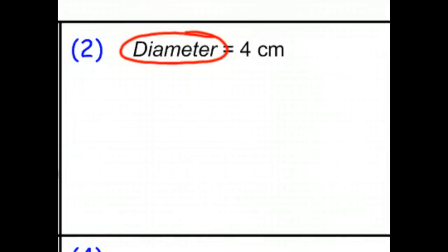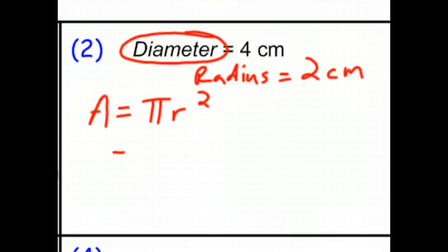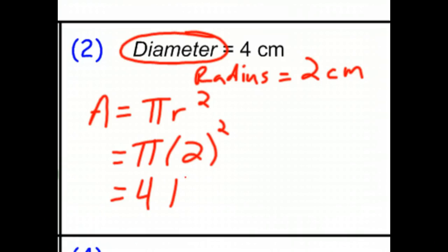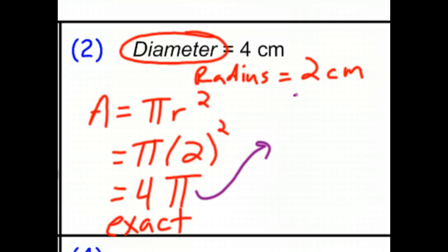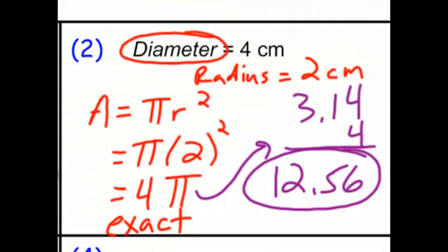For number two, we have to notice that the diameter is 4 centimeters, which means the radius is half of that — 2 centimeters. Area equals π r squared, so the area is π times 2 squared, which is 4π. That's the exact number. If we want an approximation, we multiply 3.14 times 4 and end up with 12.56 centimeters squared.